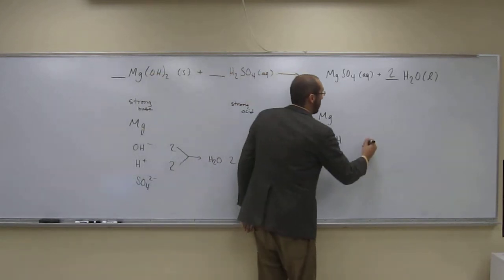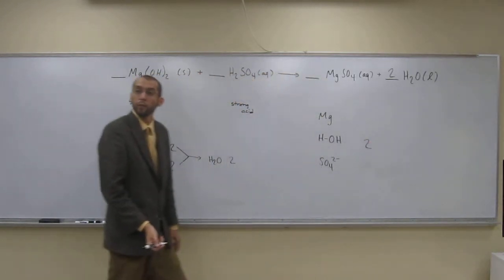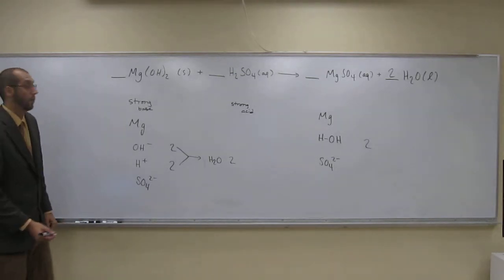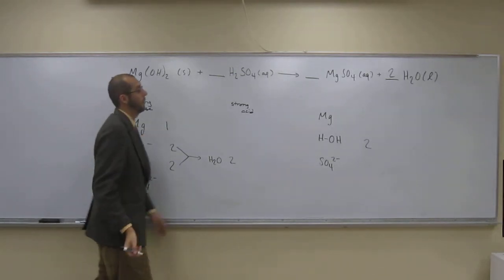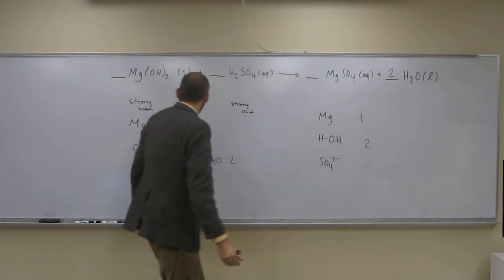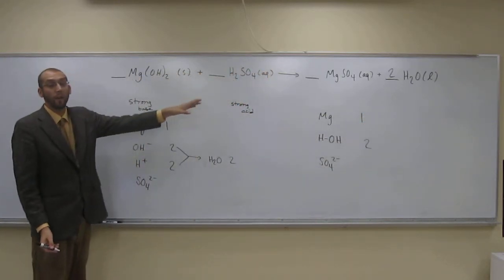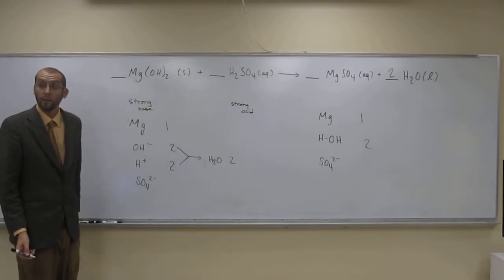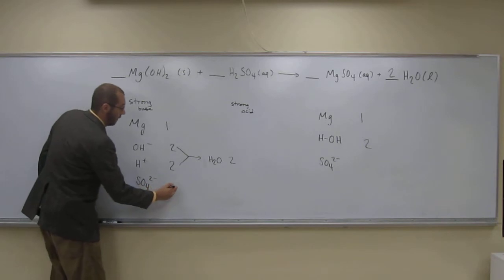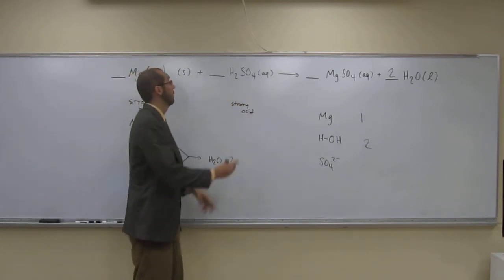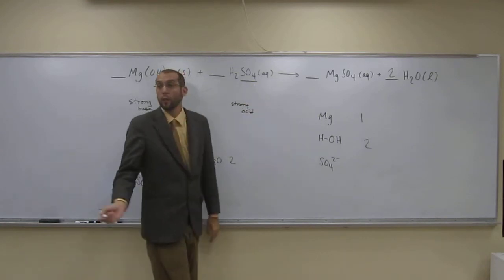So those two are going to combine to make two H2Os. So let's just say H2O is two, or HOH. Over here, HOH is two. How many magnesiums do we have over here? Just one. How many do we have over here? One. How many sulfates do we have on this side of the reaction? One, just one, right? SO4 2 minus. How many do we have? Just one, right? It's right here.